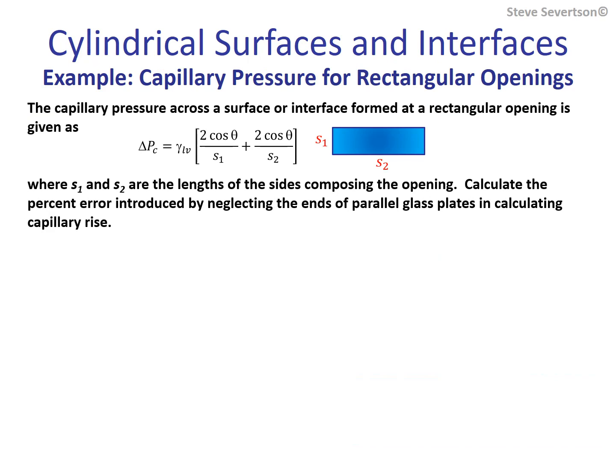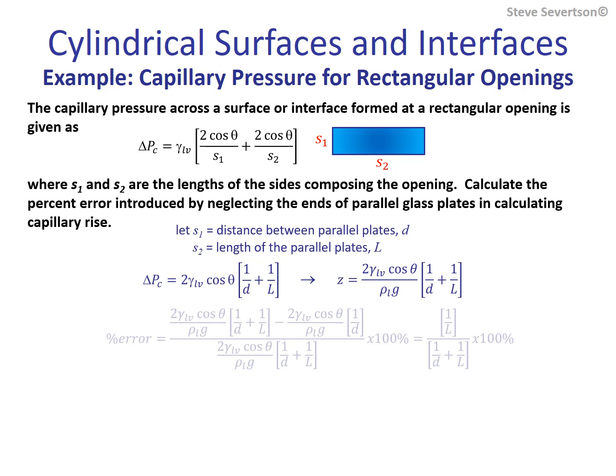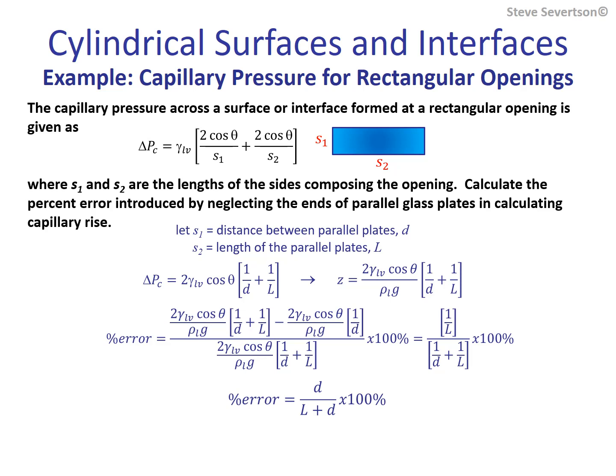This example addresses the potential error involved in modeling menisci as cylindrical surfaces and interfaces. Provided is the Young-Laplace equation for a rectangular surface or interface. We are asked to estimate the error introduced when the ends of the rectangle are ignored, developing an expression for the percentage of capillary rise neglected. The percent error depends on the relative length and width of the rectangle. Using typical values—20 mm long plates separated by 0.5 mm—we estimate an error of less than 1%.